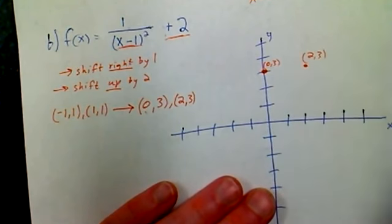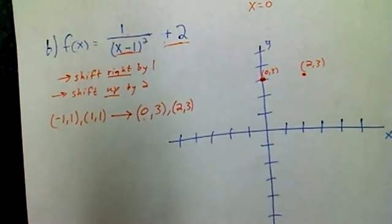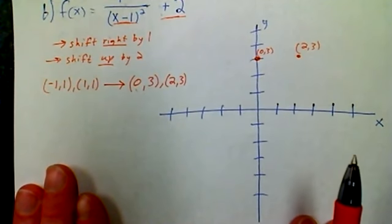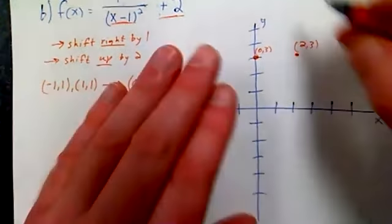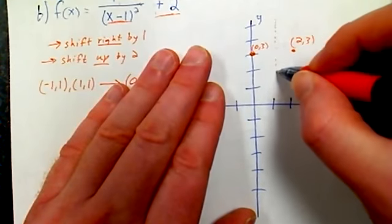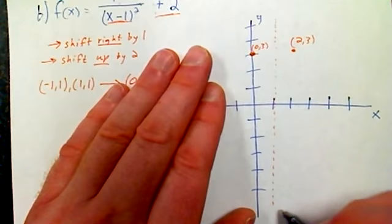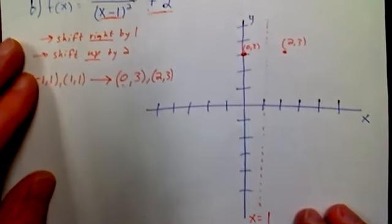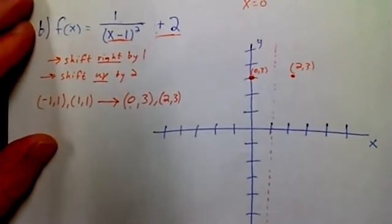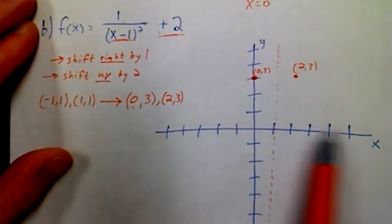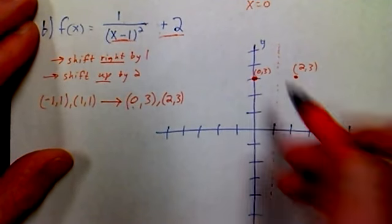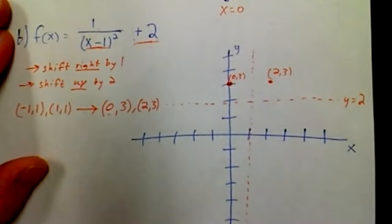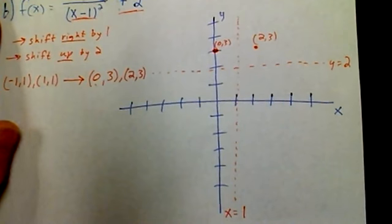Now if I shifted right by one, what happened to my old vertical asymptote I had here? That shifts right by one as well, so now I have this. This is good because it's still separating those two values. So I have down here x equal to one is the equation of the vertical asymptote. What happened if I shifted up to two to the old horizontal asymptote? That shifted up two, so right here I have y equal to two is the equation of my horizontal asymptote.